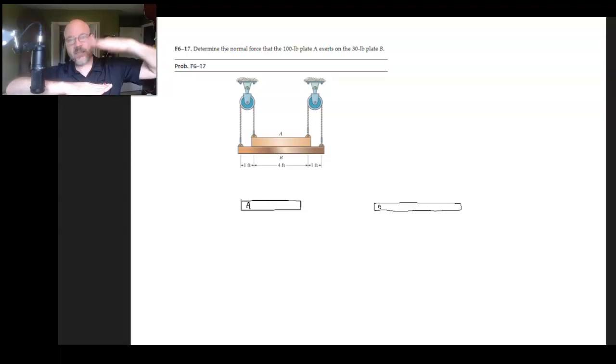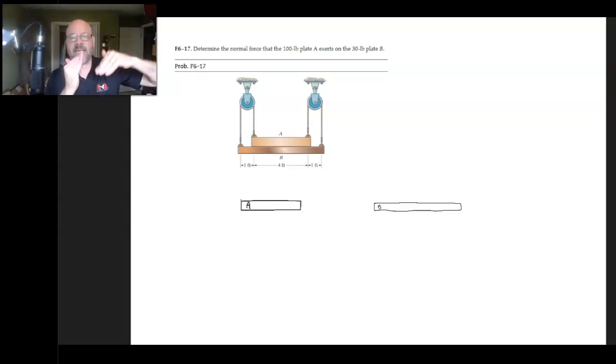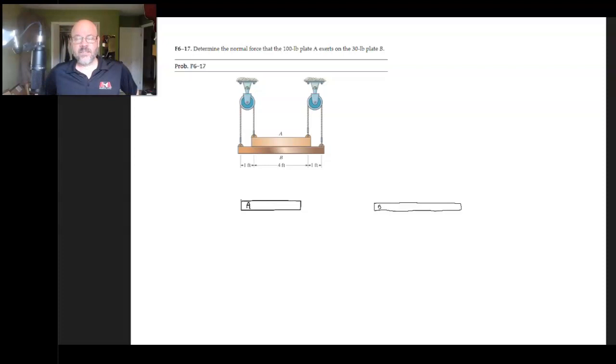So B feels a normal force from A. So it feels what's pushing down on that. But at the same time, A feels a normal force from B, from below. And what they each feel from the other one is the same amount. It's the same magnitude. So of course, that's Newton's third law.